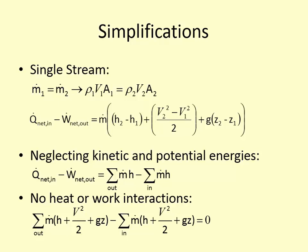M-dot is the mass flow rate. Anytime you see M-dot, that property value has a dot over it meaning per time. So M is mass in kilograms, M-dot is kilograms per second.